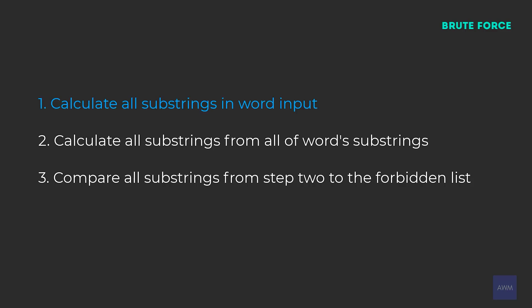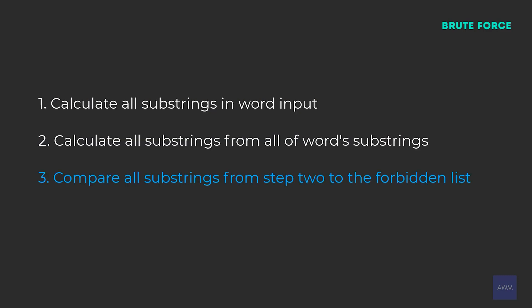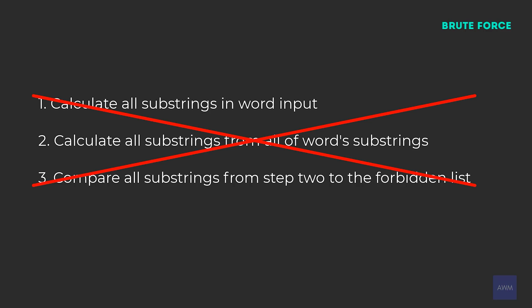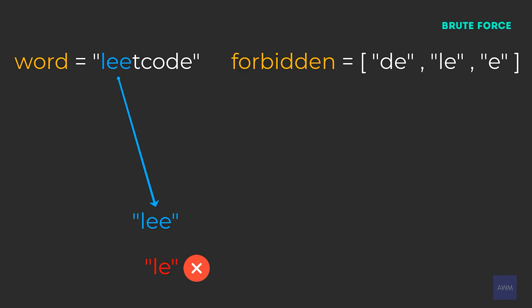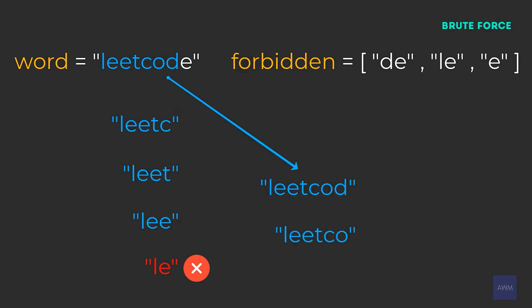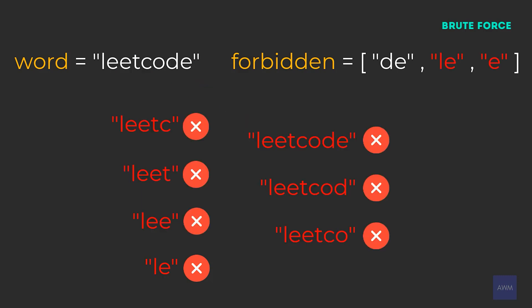For this problem, our brute force approach would be to calculate all substrings in word, then for each of those substrings calculate all of its substrings and compare them to the words in forbidden. This is obviously extremely slow and would never be accepted in a big tech interview. But thinking about this solution does give us some insight as to how to do it more optimally. If we generate the substring LE and verify it's invalid, the brute force would then generate LEE, LEET, LEETC, LEETCO, LEETCOD — a complete waste of time, since LE is a substring of all of those.